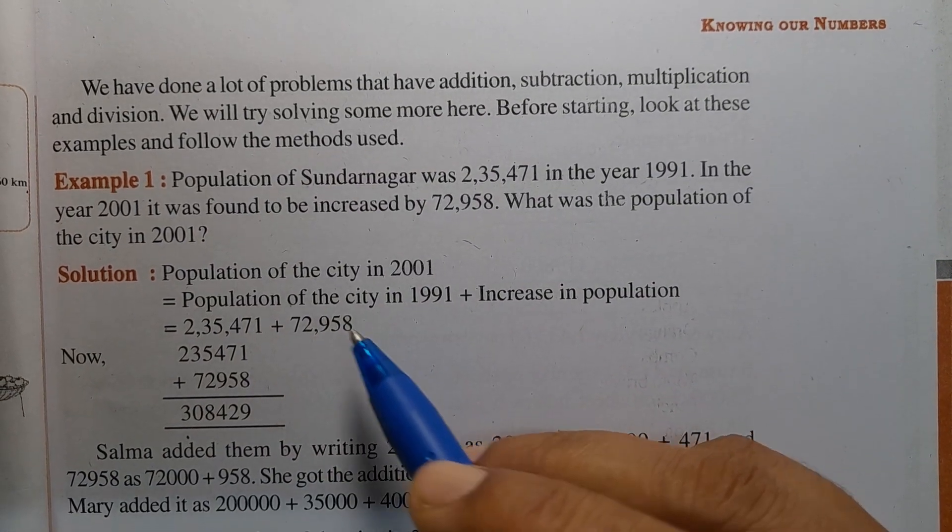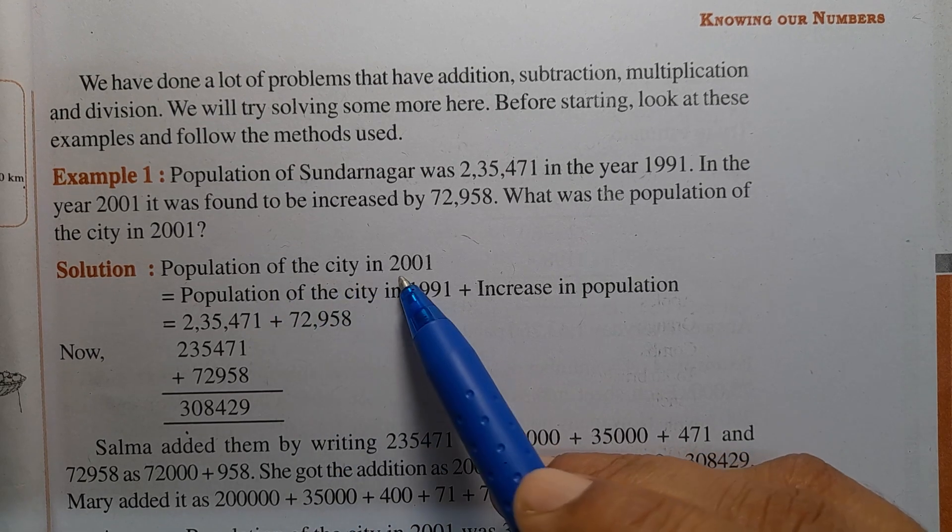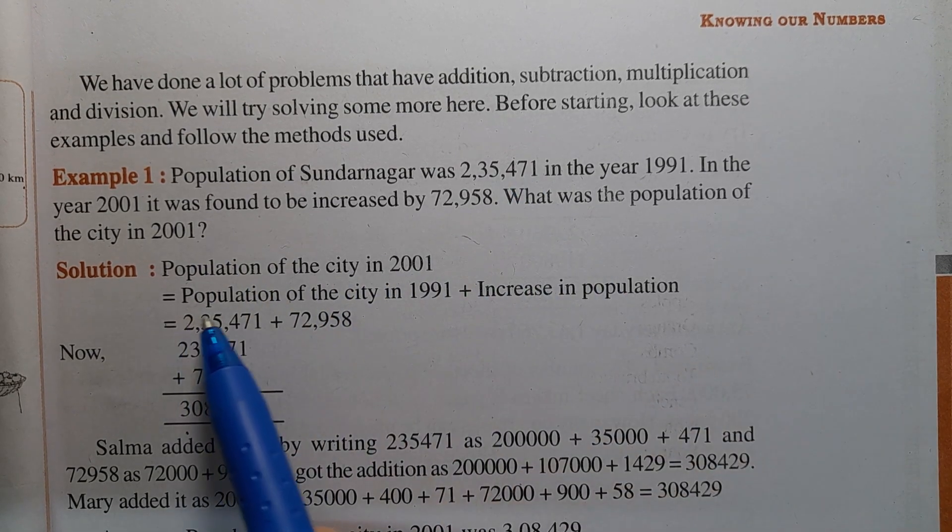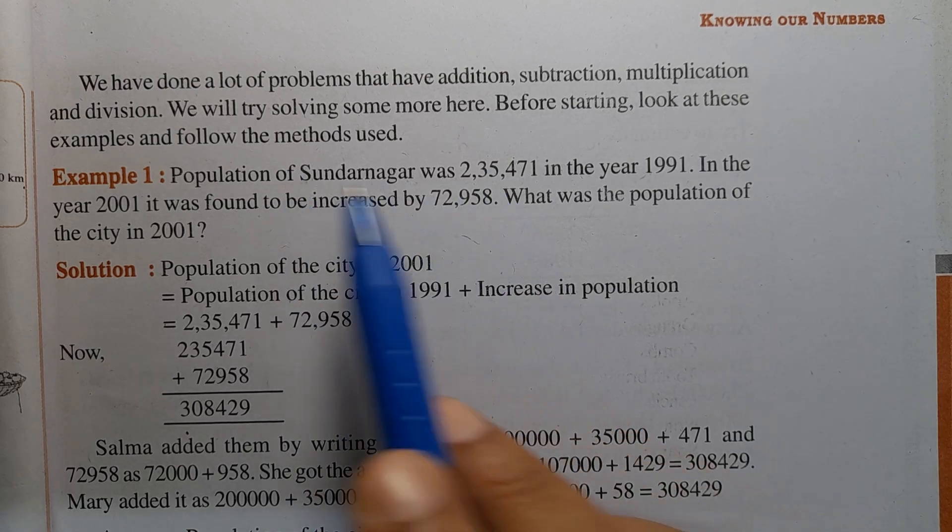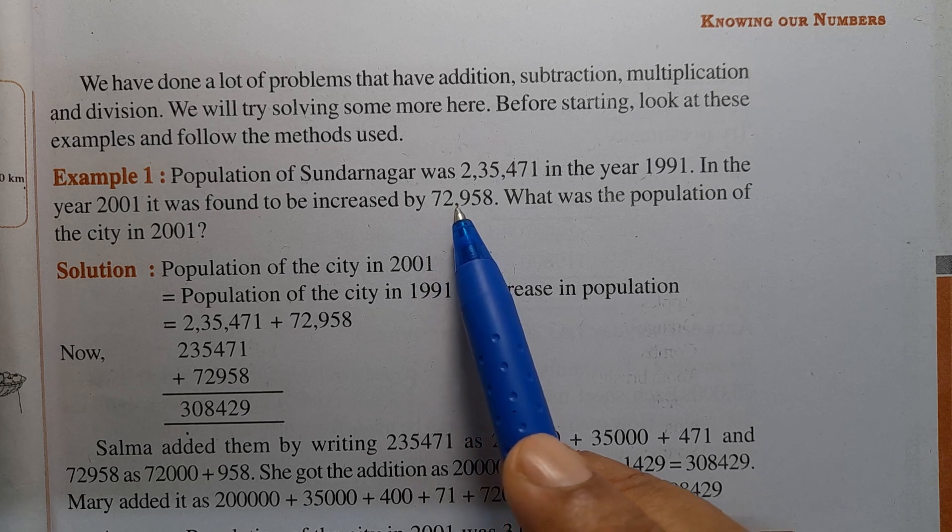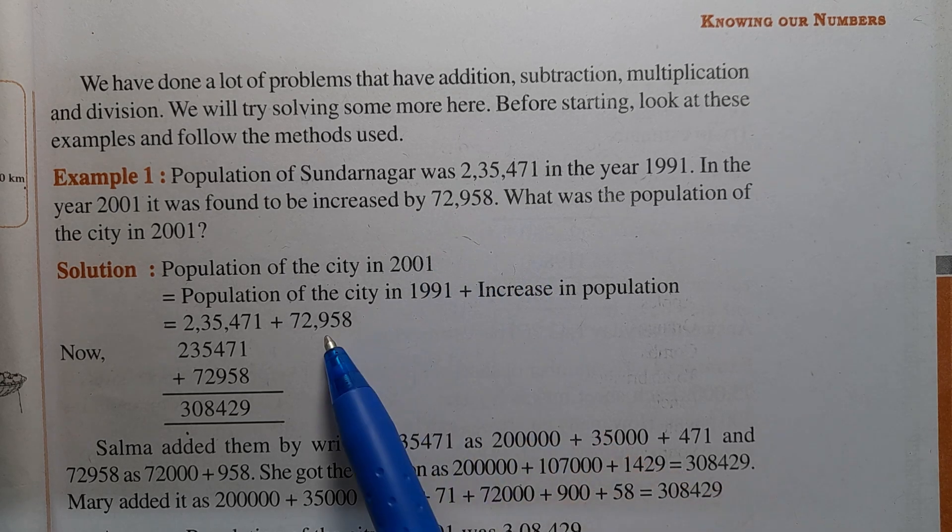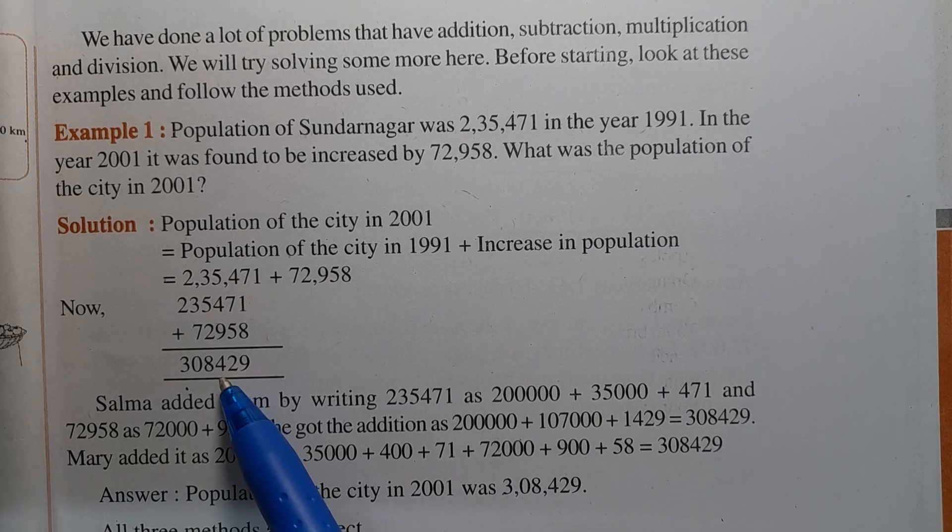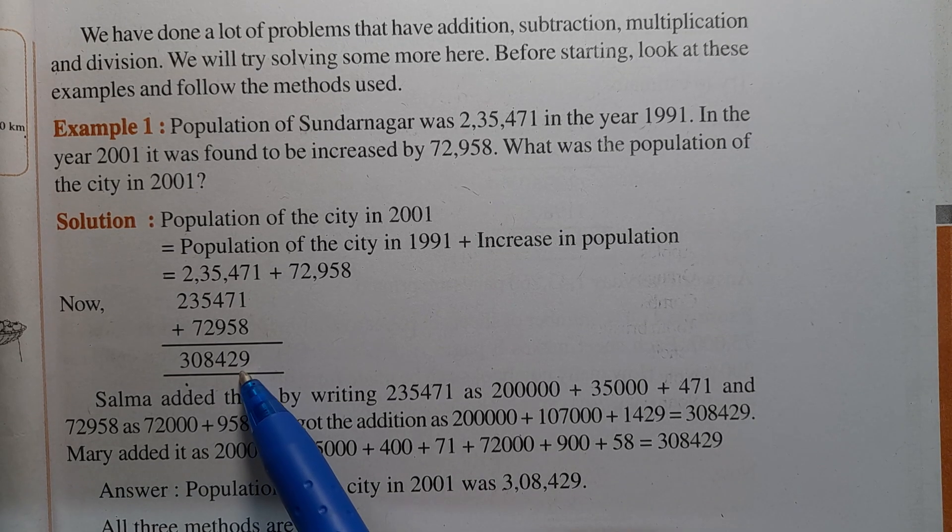See the solution for this problem. Population of the city in 2001 equals population of the city in 1991 plus the increase. That is, 2,35,471 plus 72,958 equals 3,08,429.